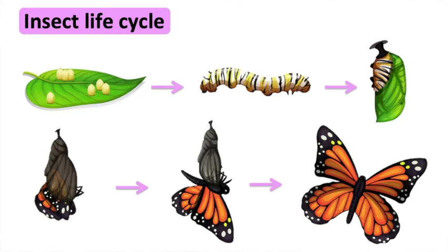For example, a butterfly. First, the butterfly lays eggs on the leaves of a plant. Inside the eggs, caterpillars begin to grow. When the caterpillar is large enough, it leaves the egg by eating it. Once the caterpillar has fully grown, it forms itself into a pupa — a type of vessel in which the caterpillar changes into a butterfly. Once the butterfly is ready, the pupa splits open and the butterfly flies away.